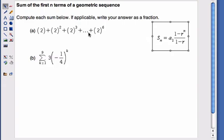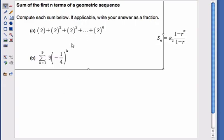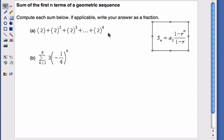In this question they're giving you two sequences and asking you to find their sums. So we know these are geometric sequences. We can see that it's following a geometric pattern. This one's being multiplied by 2 to get from one value to the next, and this one is being multiplied by a negative one-fourth.